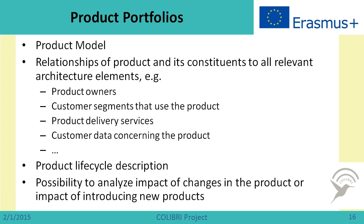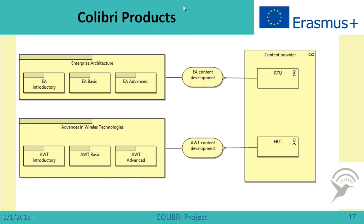Let us start with product portfolios. For product portfolios, one important thing is the product model. We would think about relationships of a product and its constituents to all relevant architecture elements, such as product owners, customer segments that use the product, product delivery services, and customer data concerning the product. We could also use enterprise architecture elements to show product lifecycle descriptions, and we could analyze the impact of changes in a product or the impact of introducing new products on other elements of enterprise architecture.